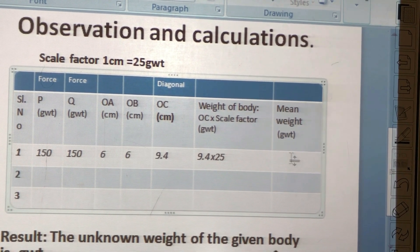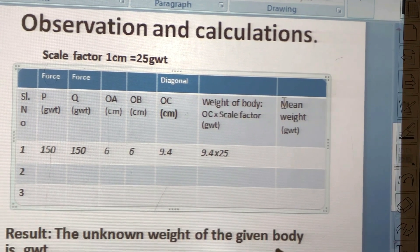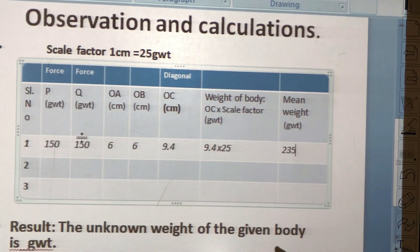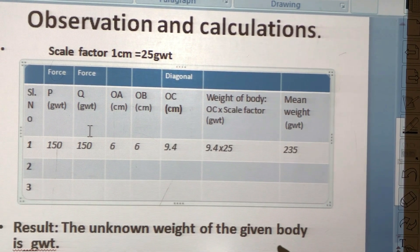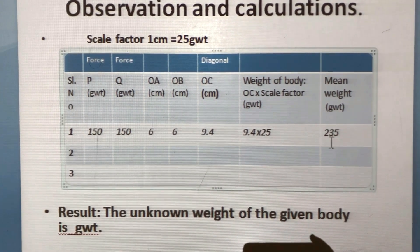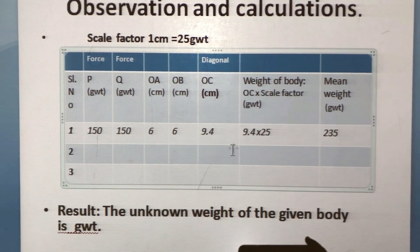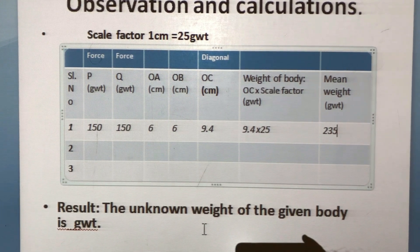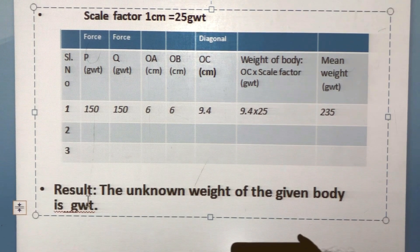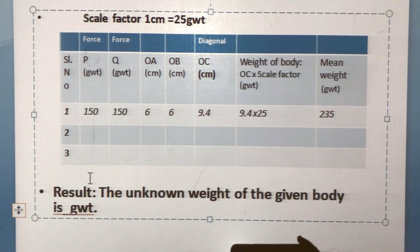So we get an answer of 235 gram weight. Similarly, we can record observations for the other trials and then take the mean. So for this example, we can say that the unknown weight of the given body is 235 gram weight.